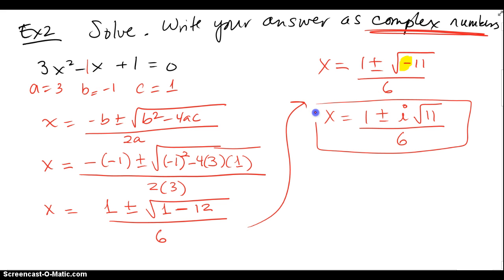So this is good enough for me, or if you want to put it split up, the 6 goes with both of them, 1 over 6 plus or minus, maybe you'll put it as like a square root of 11 over 6, and i all by itself, that would be in the form a plus bi.